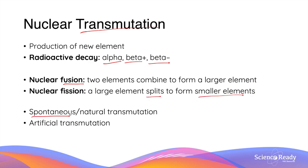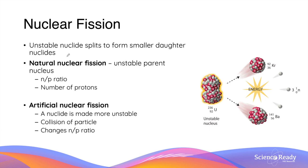Nuclear fission can be spontaneous or artificial. Spontaneous or natural fission is when the nucleus splits on its own, whereas artificial fission involves some kind of intervention. Nuclear fission occurs when an unstable nuclei splits apart to form smaller daughter nuclei. In natural nuclear fission, an unstable parent nucleus such as uranium-236 splits to produce two nuclei that are smaller in size, and neutrons can sometimes also be produced.